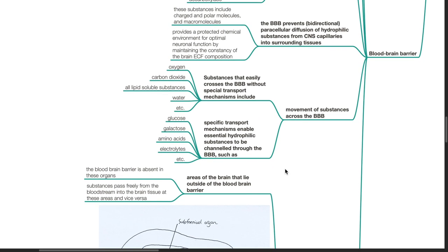Specific transport mechanisms enable essential hydrophilic substances to be channeled through the blood-brain barrier such as glucose, galactose, amino acids, electrolytes.